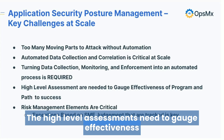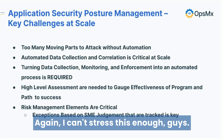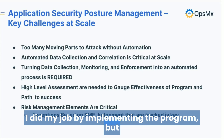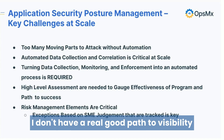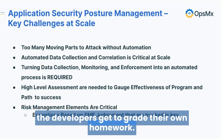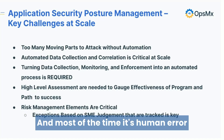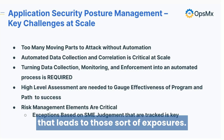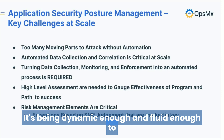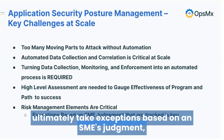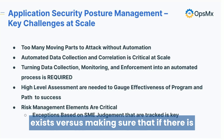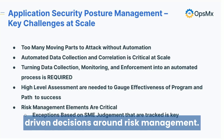High-level assessments need to gauge effectiveness of the program and the path to success. Most of the time when we see companies implementing these security programs, they think they've done their job by implementing the program, but they don't have a real path to visibility around how successful it's being. We've heard prospects use terms like 'the developers get to grade their own homework.' It's really about security, and most of the time it's human error that leads to those exposures. The risk management piece is what we're doing all this for — being dynamic enough to take exceptions based on SME judgment, allowing paths where acceptable risk exists, and making sure unacceptable risk is exposed for data-driven decisions.